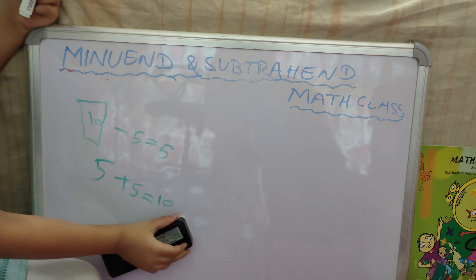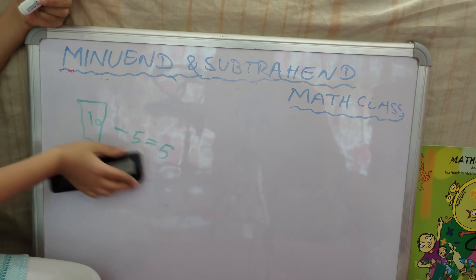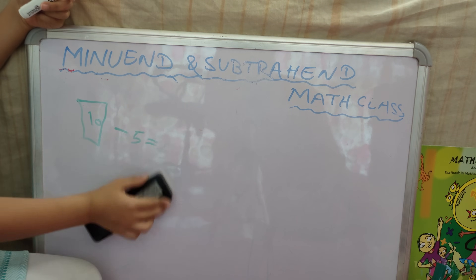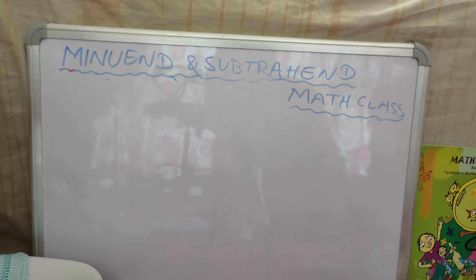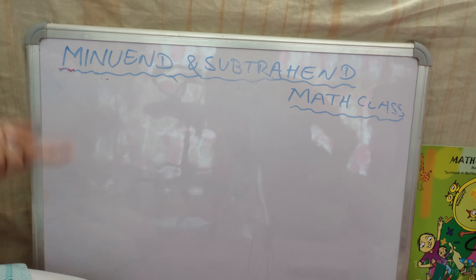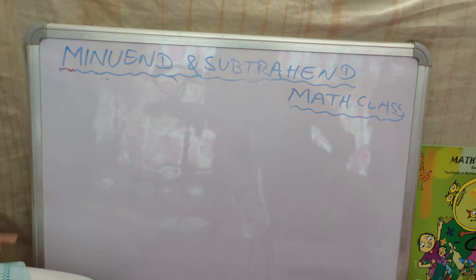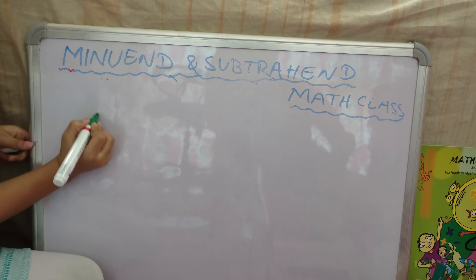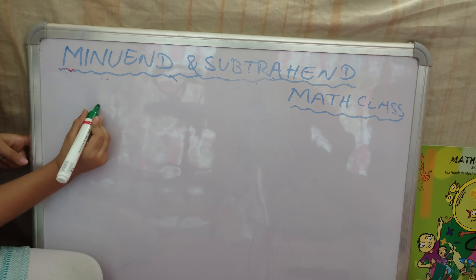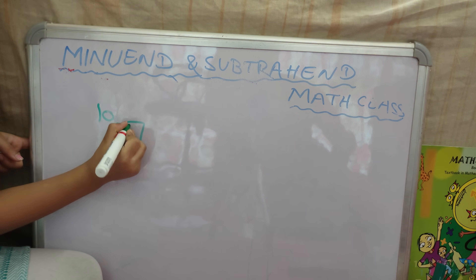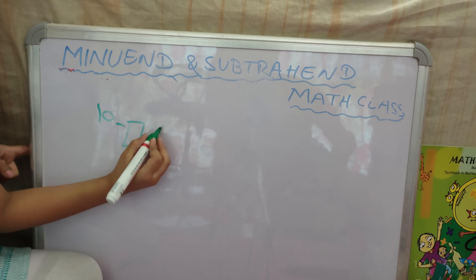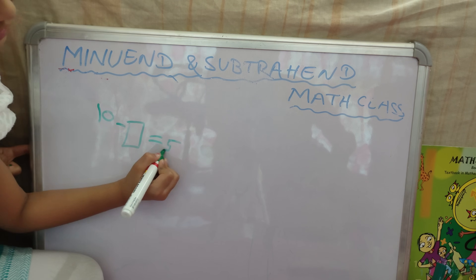Let's do a different question. Now we will do missing subtrahend. 10 minus blank is equal to 5.